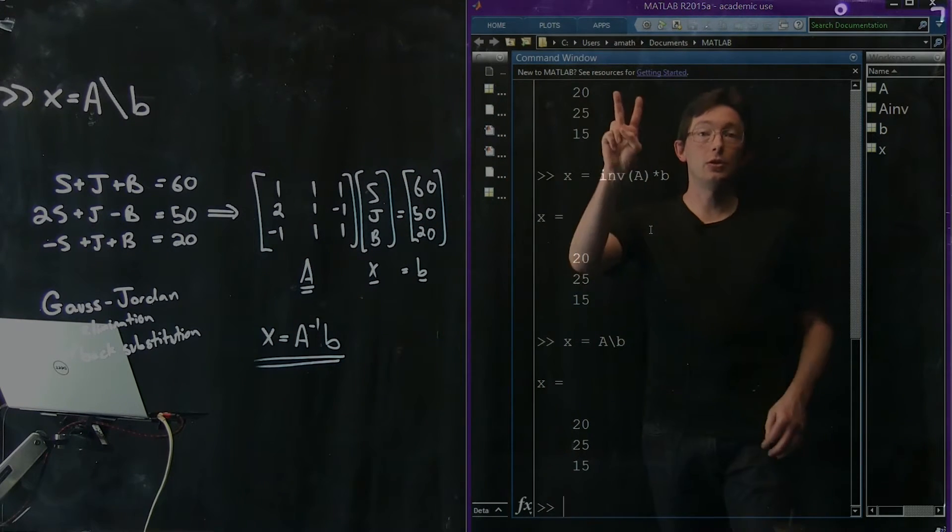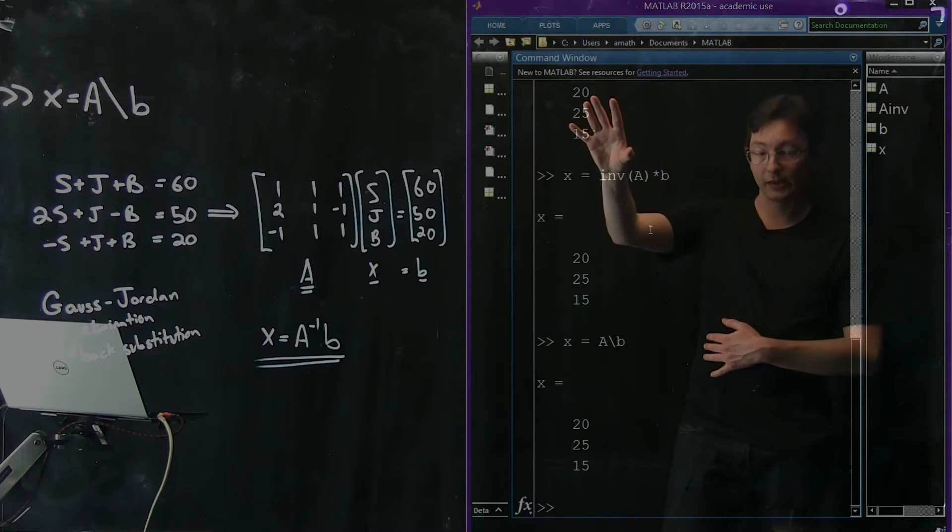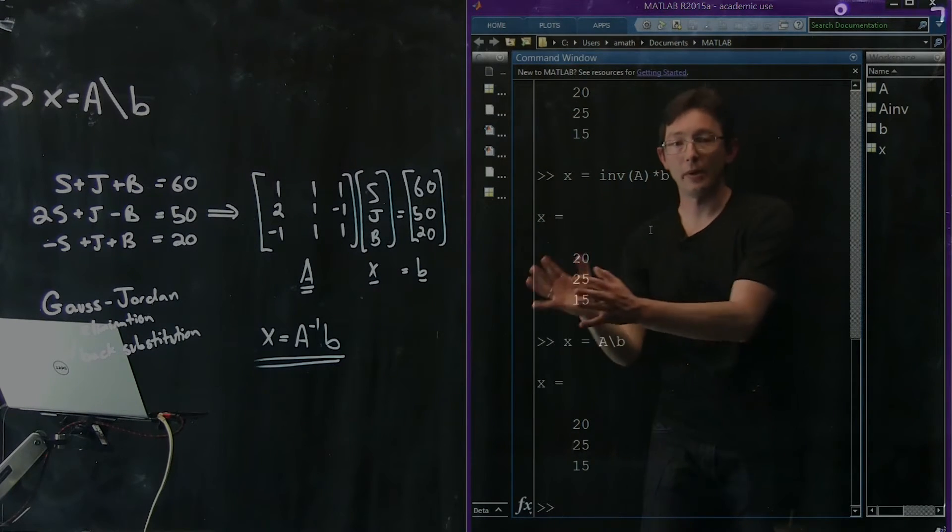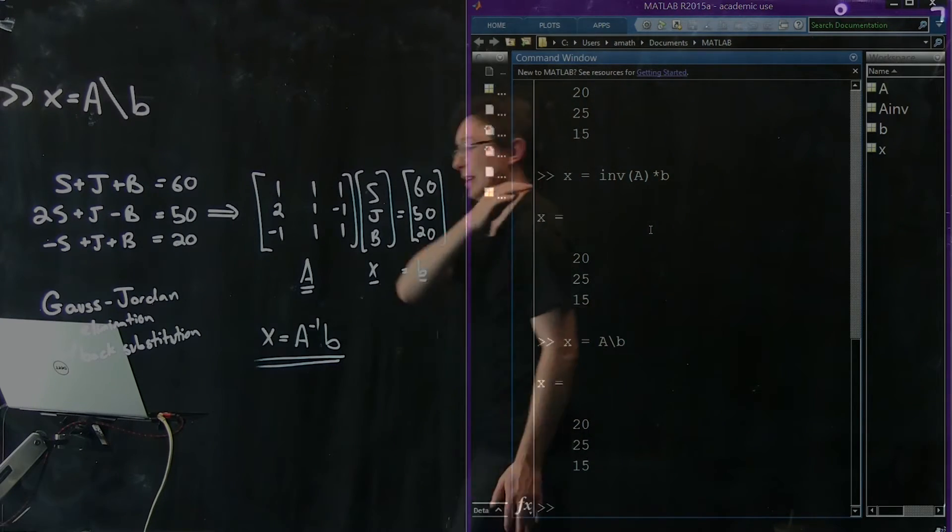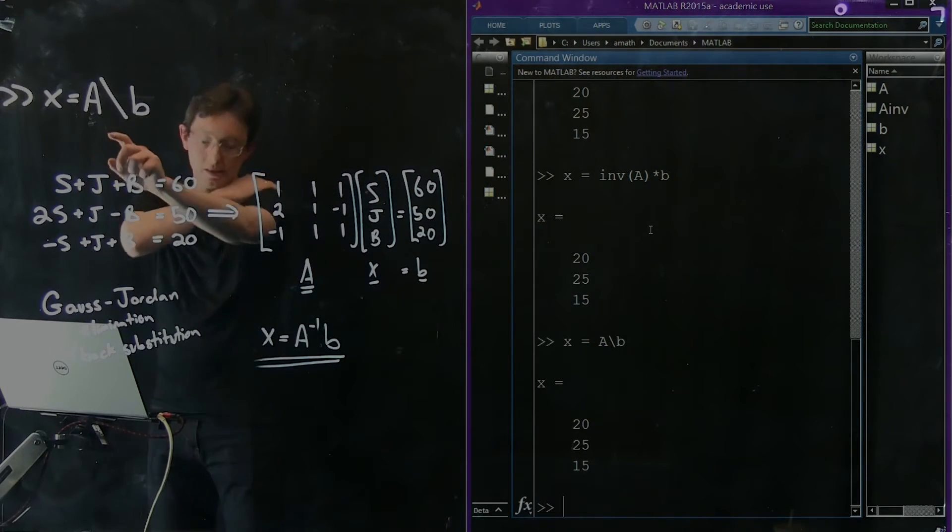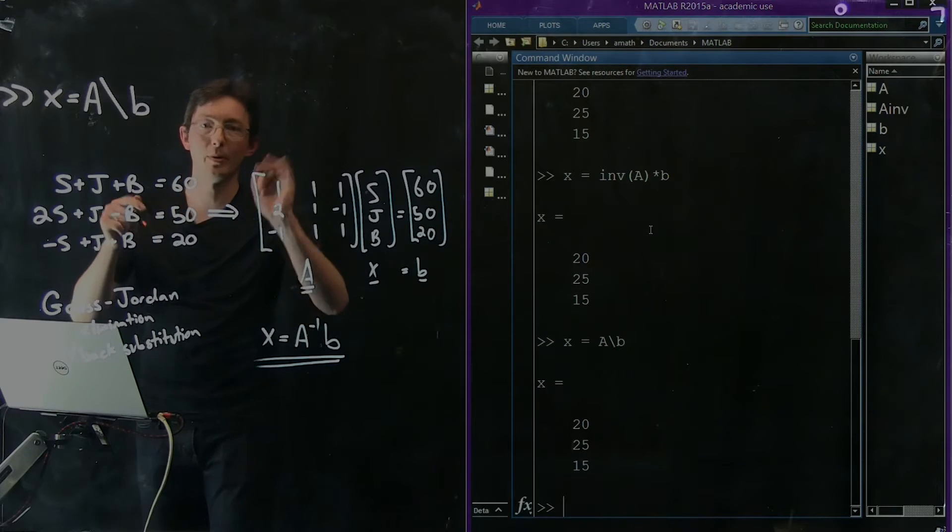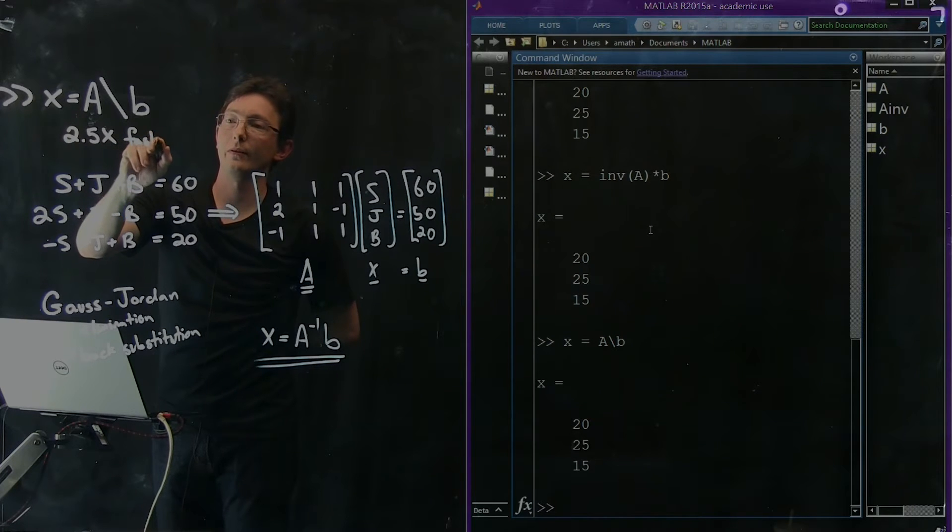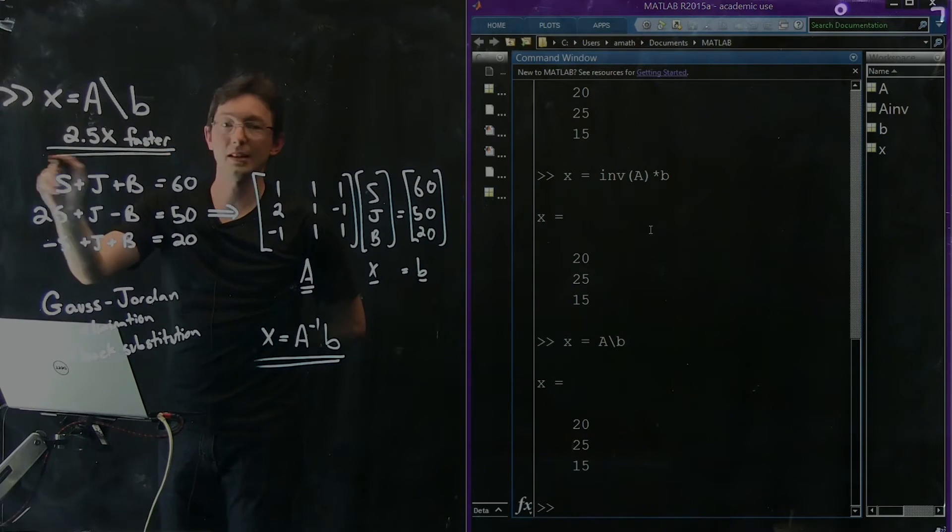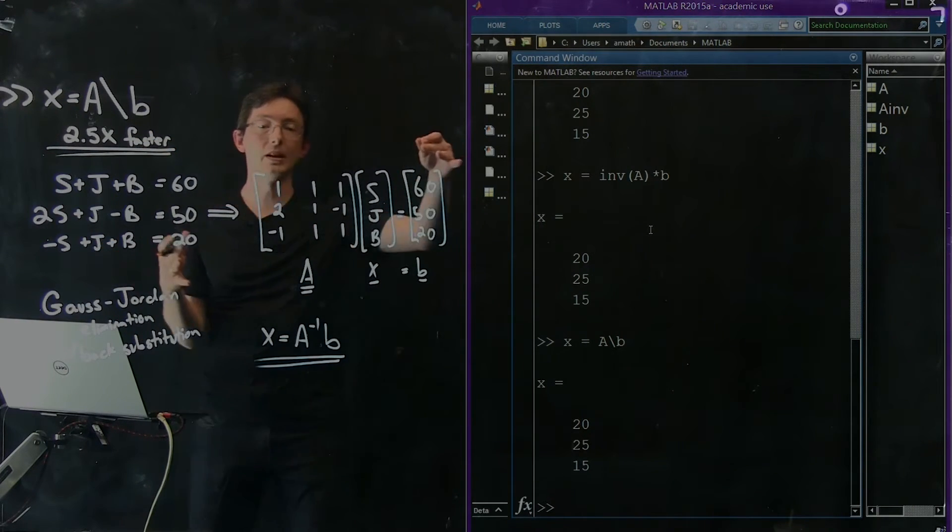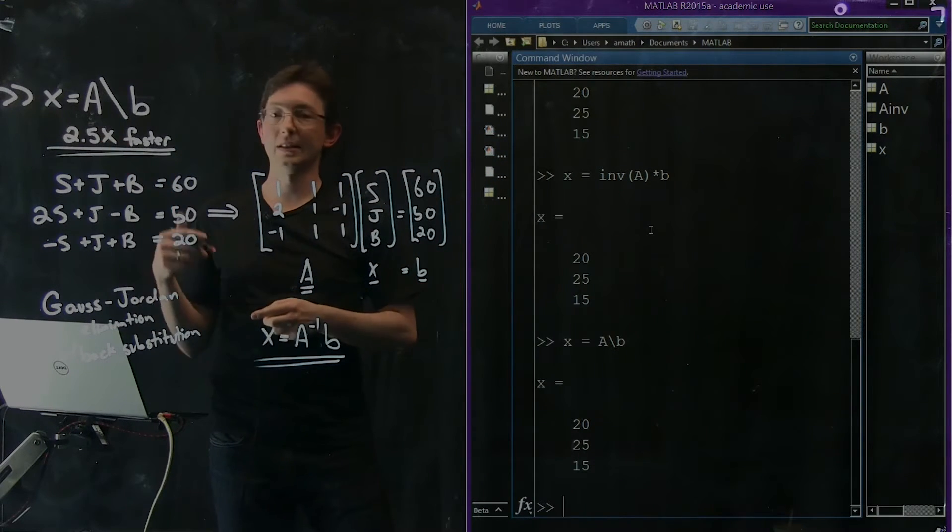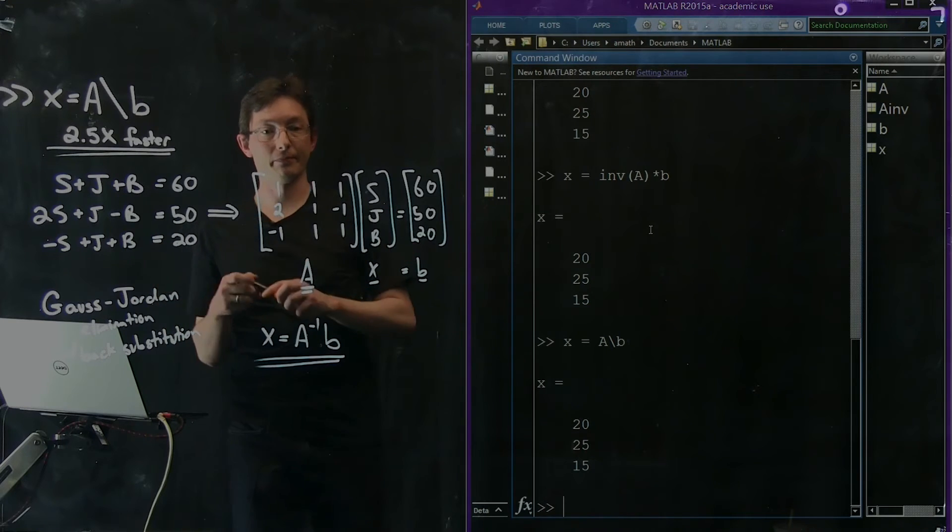We've seen two different methods. We can do the inverse of A times B, and we can do A backslash B. It turns out that this backslash method is about two to two and a half times faster. If you're doing a big matrix inverse, it might take five minutes, and if it takes two minutes instead, that's awesome.